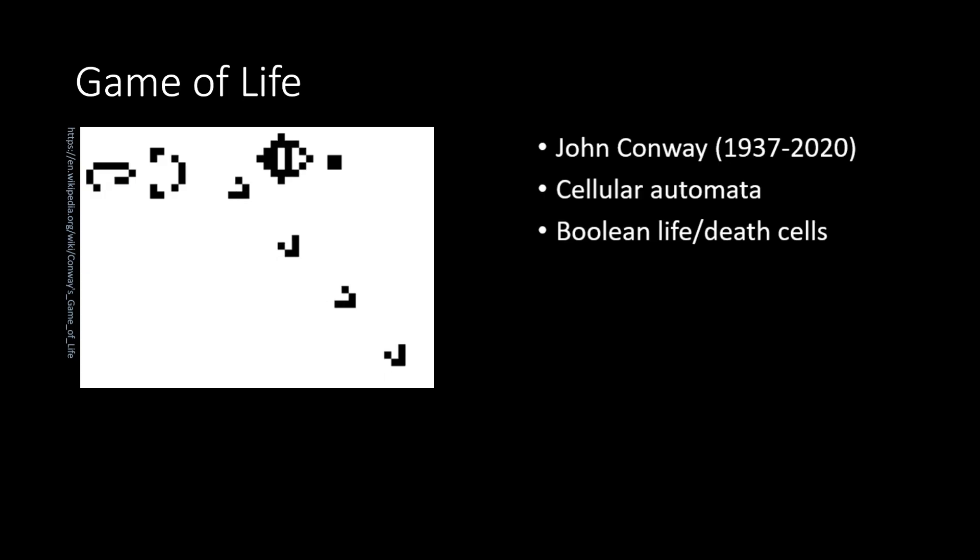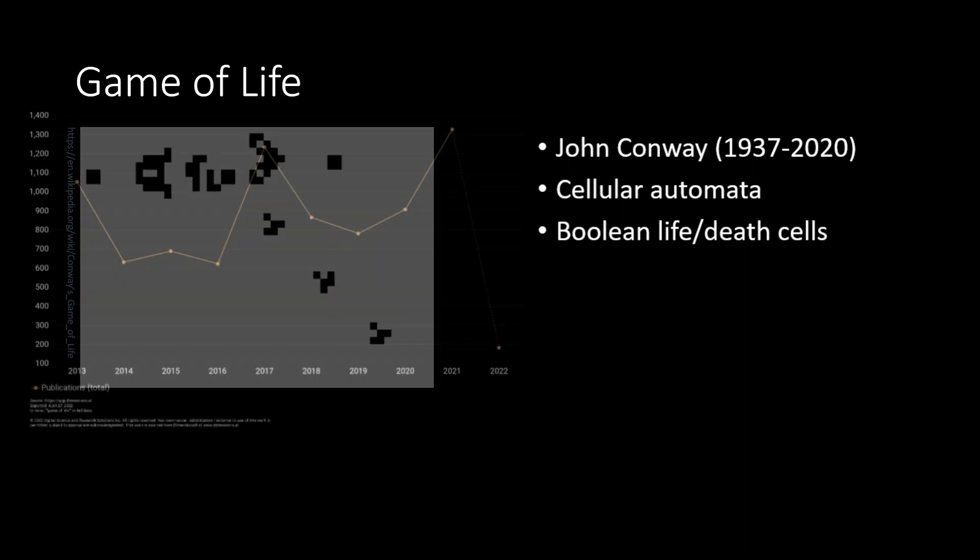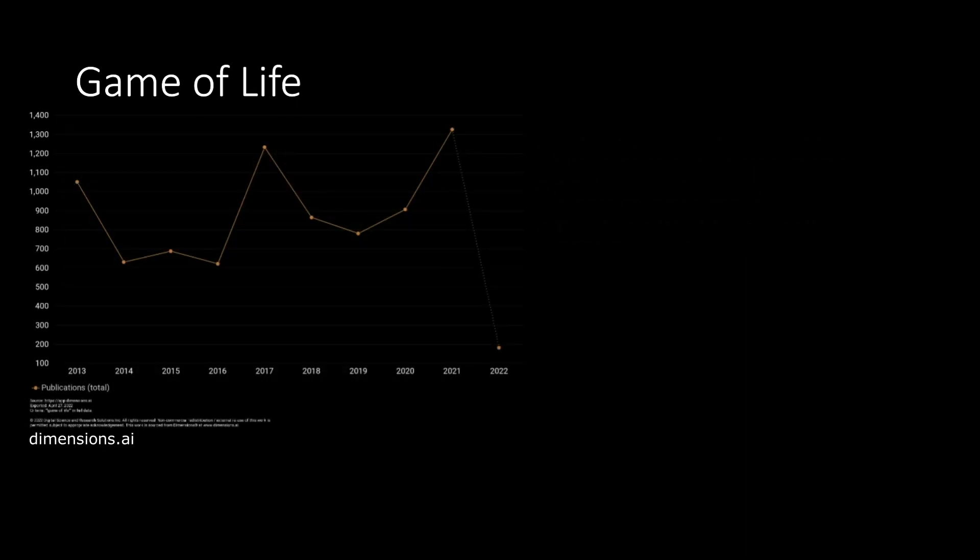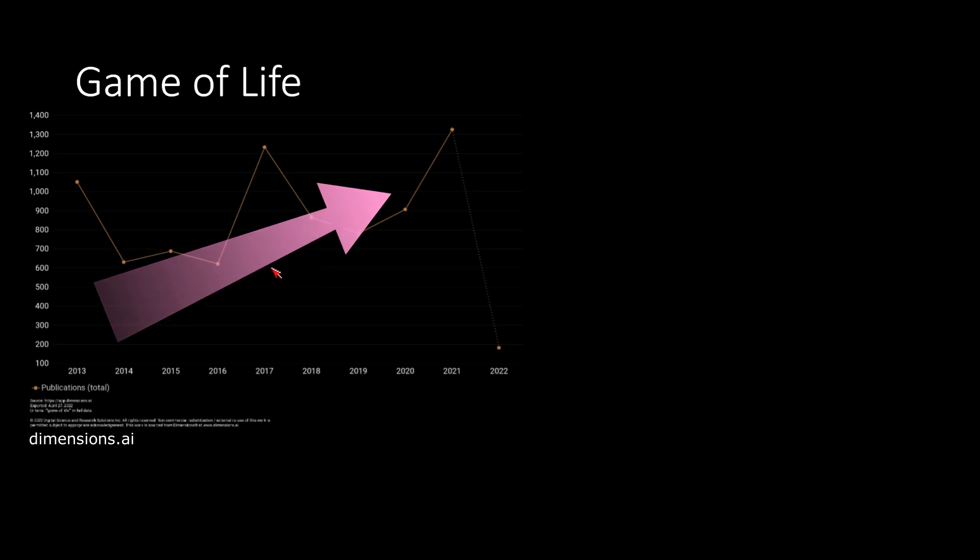Before moving on to description of the Simple Smooth Life model, let's look at this chart. The chart gives information about the number of scientific papers mentioning the original Game of Life model. What this chart shows is the non-monotonous growth of Game of Life appearances in science, with the peak above 1,300 in 2021.